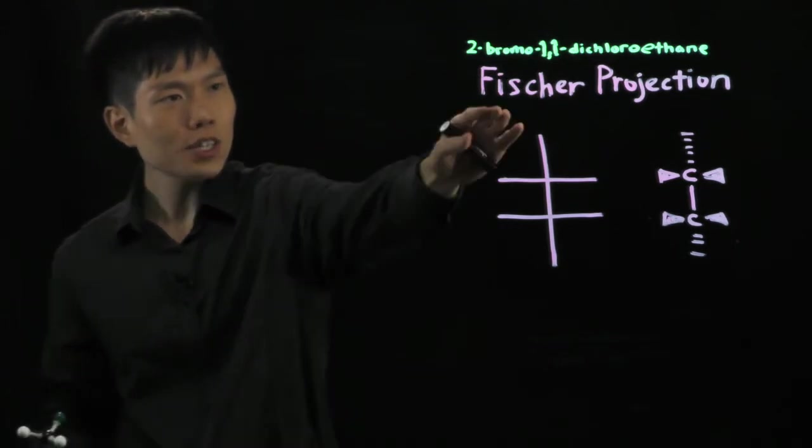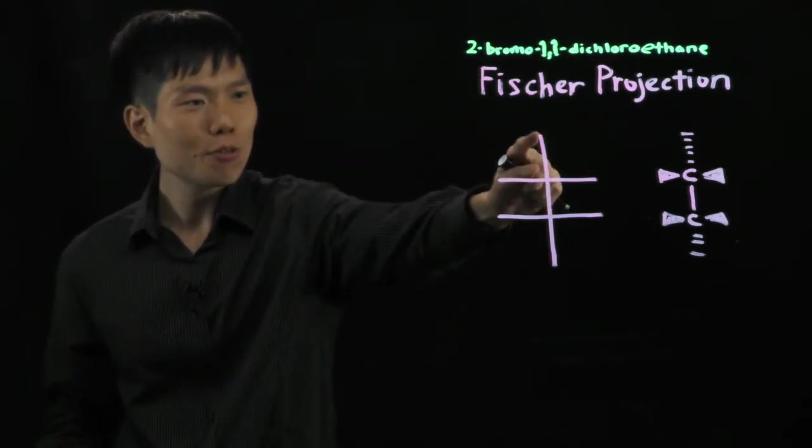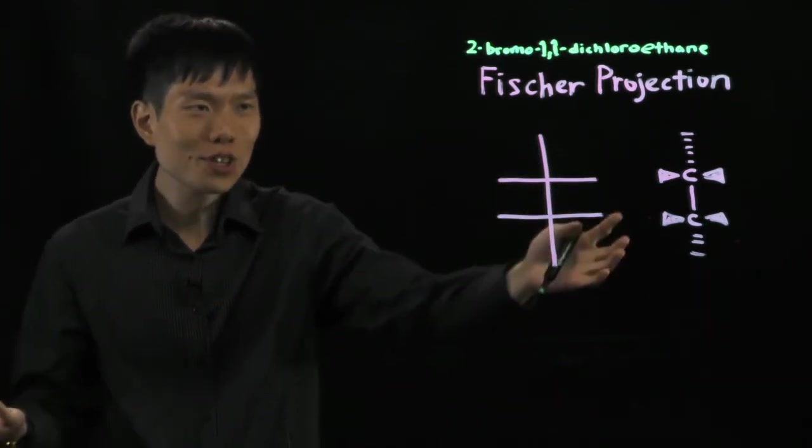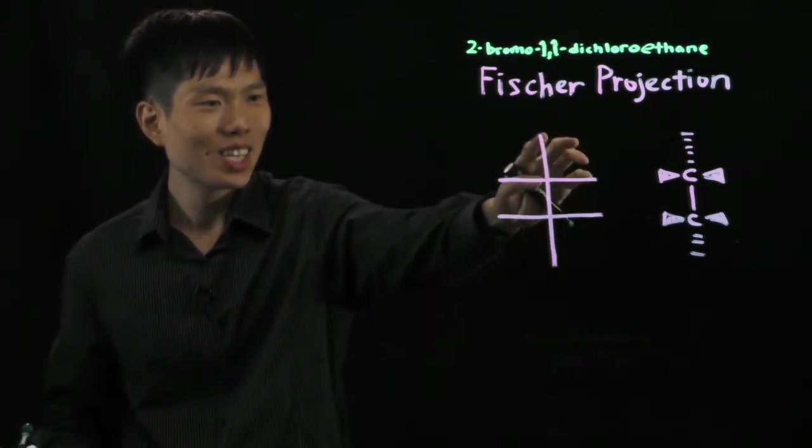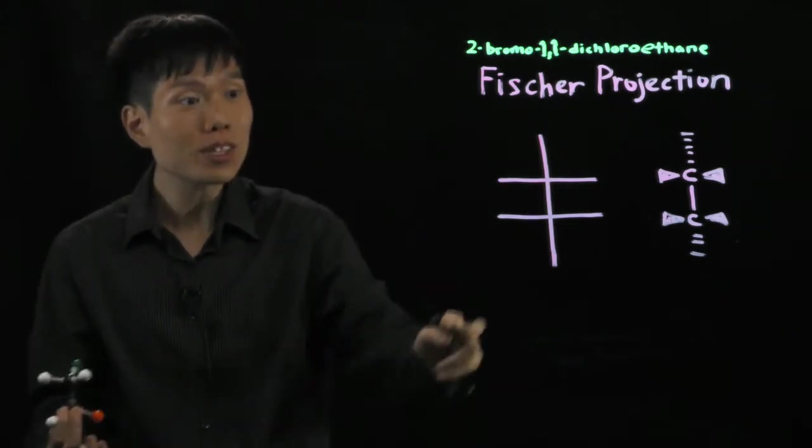So, Fischer projection, you'll see in textbooks or anywhere, they always give you something like this in terms of a skeleton. It looks like a fish but it's different spelling. It's German scientist Fischer. You'll notice that it's always like a cross. Now you have to understand what this means.